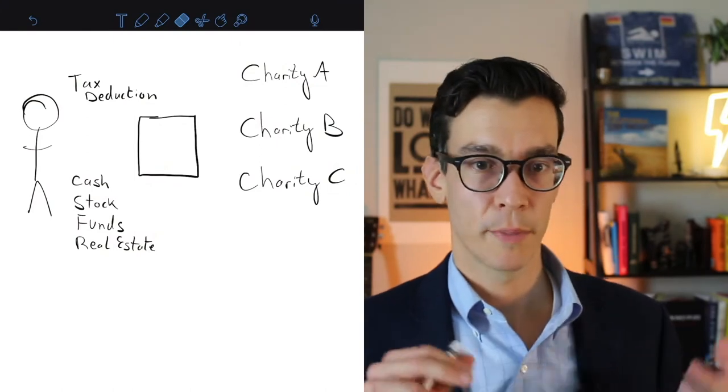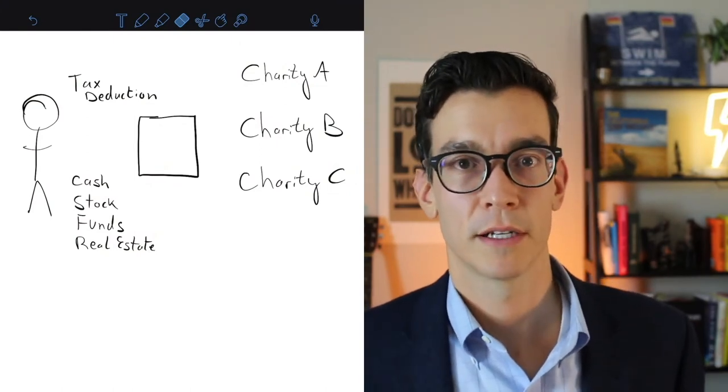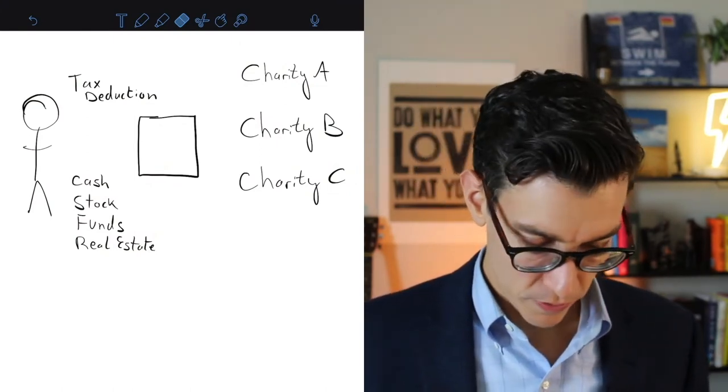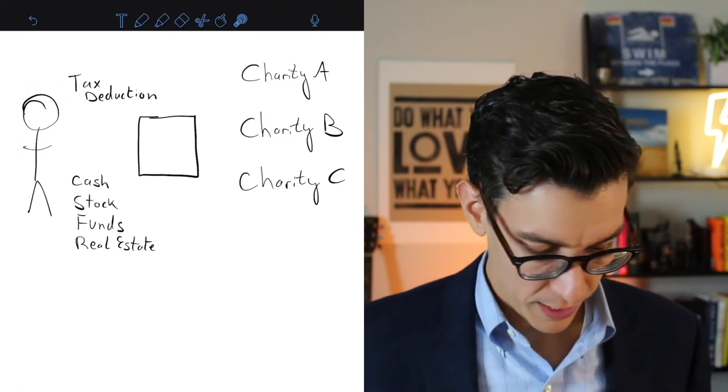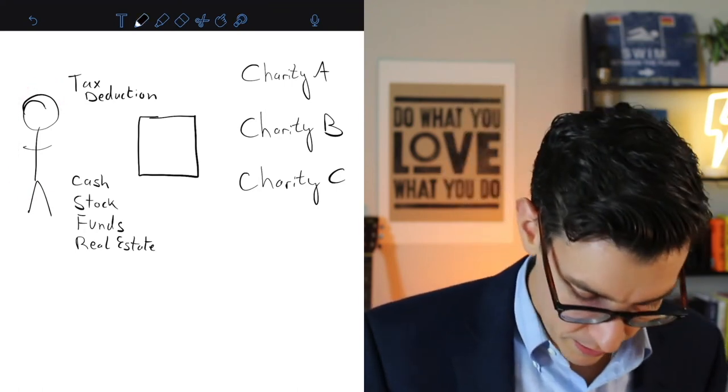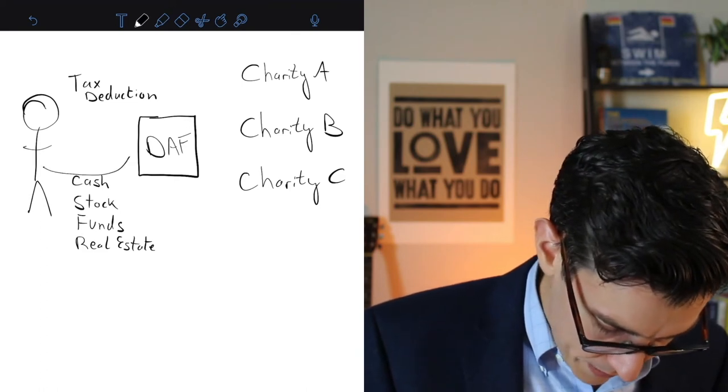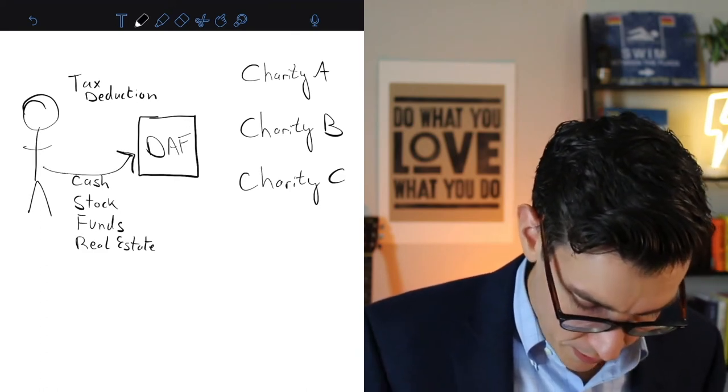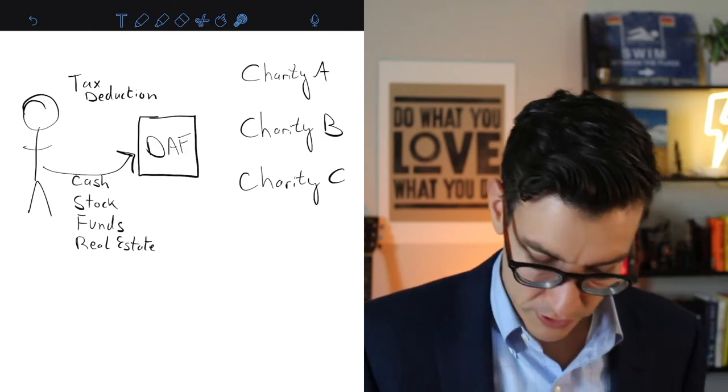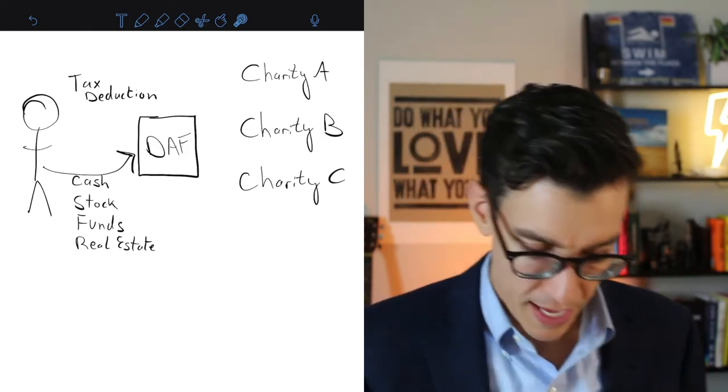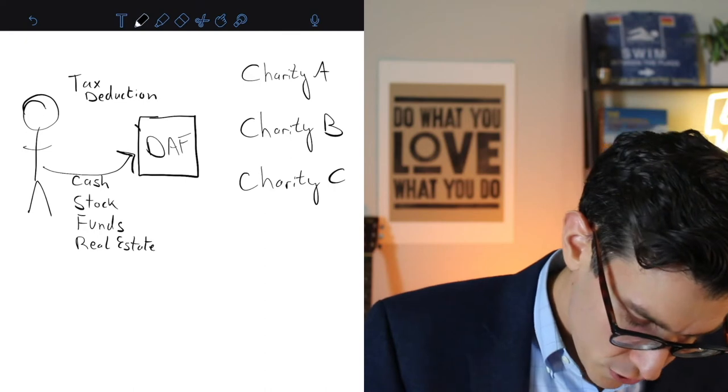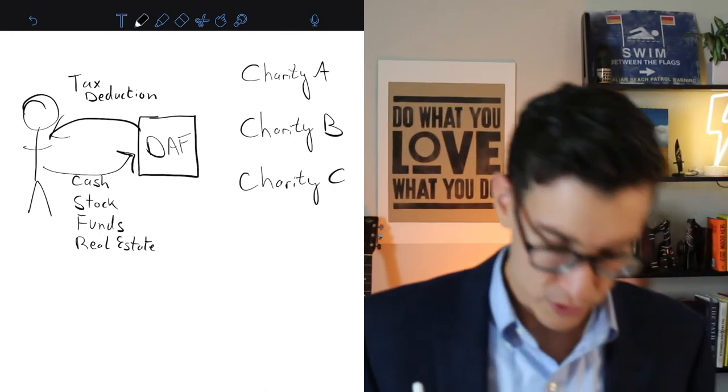So take a look at this. Here's an example of what it is and what the benefit is of a donor advised fund. Let's say you're the donor over here and you decide to give to a DAF, donor advised fund. You can give any amount you decide and you can give out of cash or stock or funds or real estate and there's even other ways to give. And the year that you give, you get a tax deduction, which is great.